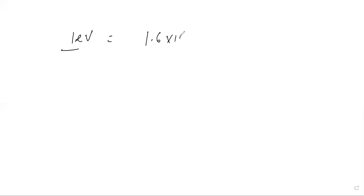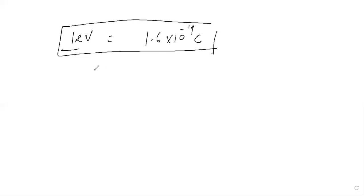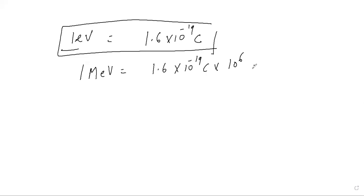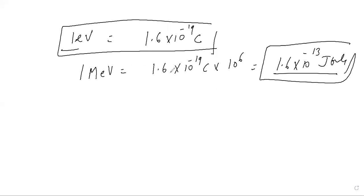One electron volt equals 1.6 × 10⁻¹⁹ joules. One million electron volt (1 MeV) equals 1.6 × 10⁻¹³ joules. Now we need to find the relation between AMU and mega electron volt (MeV). Using E = mc², if M = 1 AMU = 1.66 × 10⁻²⁷ kg and c = 3 × 10⁸ m/s, then E = 1.66 × 10⁻²⁷ × (3 × 10⁸)² = 1.49 × 10⁻¹⁰ joules.